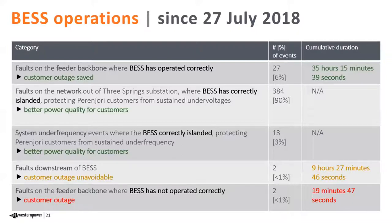The BESS islands the town every time there's an upstream fault. Sometimes it does island for faults on feeders outside of Three Springs substation — we've had 384 of those events, or 90% of total events, where customers have been insulated from the same extent of voltage dips they normally would have experienced. There are a number of other benefits: the BESS also islands during system under-frequency events given its sensitive under-frequency settings. We've had two events for faults downstream of the BESS — these are town faults where the customer outage was unavoidable.